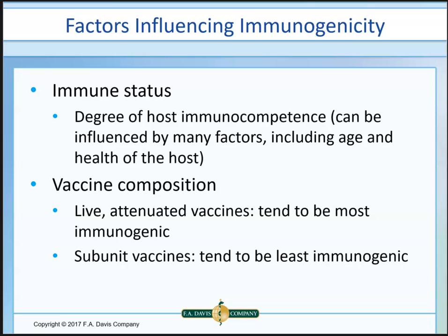The third factor affecting immunogenicity is the composition of the vaccine. Subunit vaccines — parts of a bacterium or virus — don't seem to work as well, but sometimes that's all we can do and something is better than nothing. Live attenuated vaccines seem to be the best we have and are given the majority of the time.